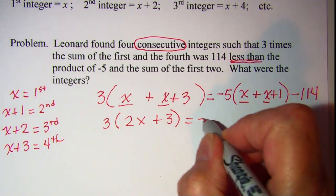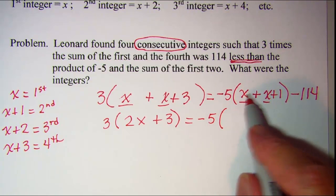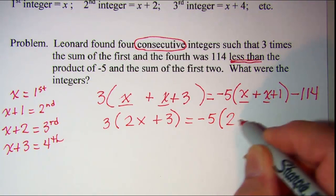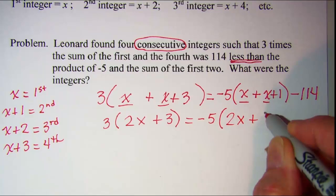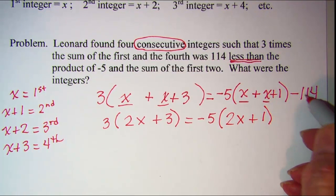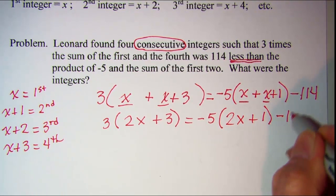So I have negative 5 times the quantity x plus x is 2x plus 1. Close up my parentheses and then subtract 114.